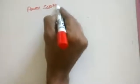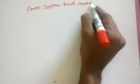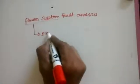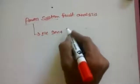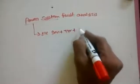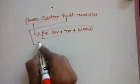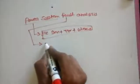Today we are going to see power system fault analysis. Power system means electrical power — generator, transmitter, and utilizer. These three terms together are called a power system. Then, what is meant by fault? Fault means abnormal condition.